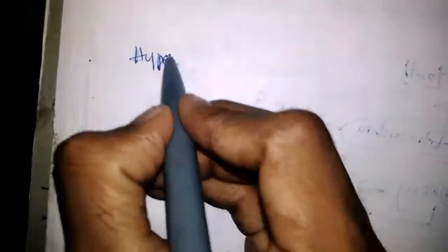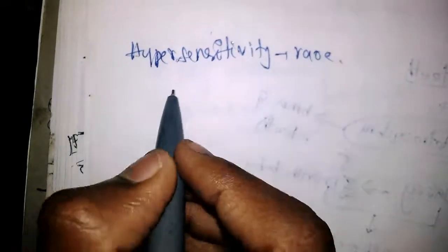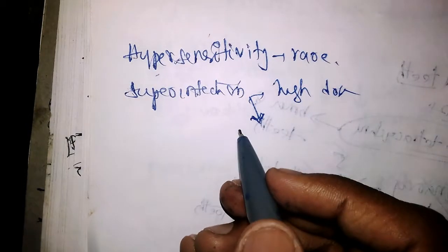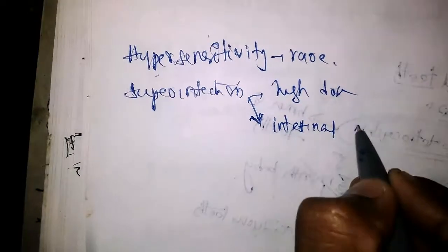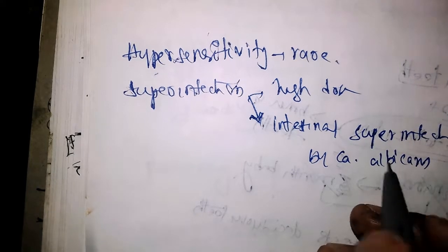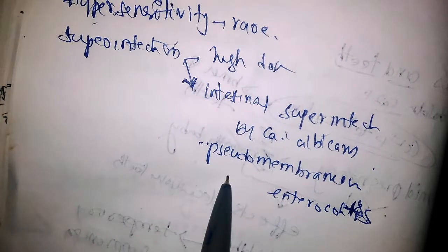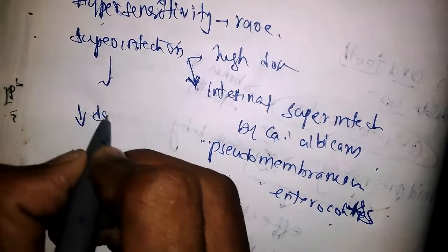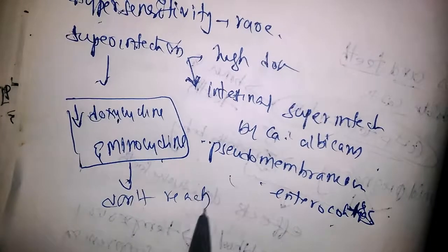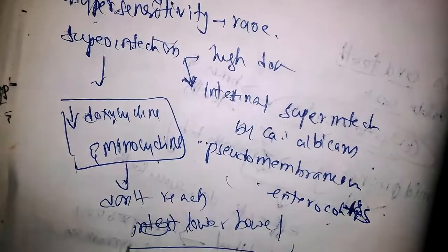Hypersensitivity is rare. Superinfections take place with high doses. The most important complications of superinfection are intestinal superinfection by Candida albicans and pseudomembranous enterocolitis. Superinfections are less common with doxycycline and minocycline because these drugs usually do not reach the lower bowel in significant concentrations.